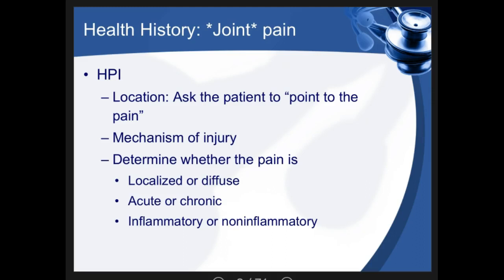Most musculoskeletal complaints are going to be joint pain, so review the common health history elements needed to assess. The history should focus on the location of the pain, how the pain occurs, and a description of the pain to determine if it's acute or chronic, localized or diffuse, inflammatory or non-inflammatory. While asking these old CART questions, ask the patient to point to the pain, as patient descriptions of pain location are often vague or inaccurate.